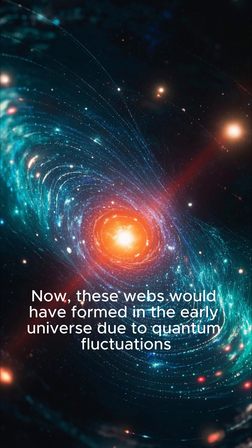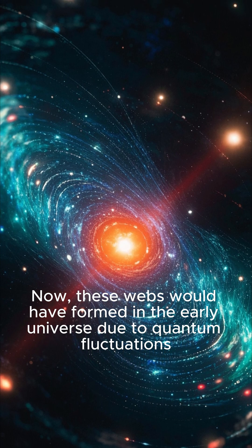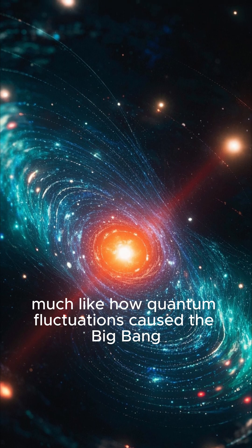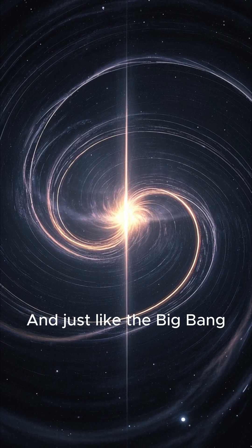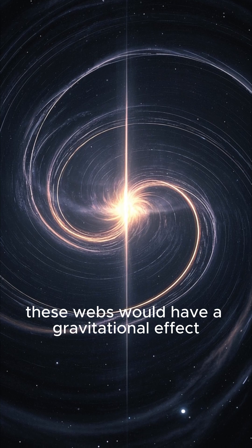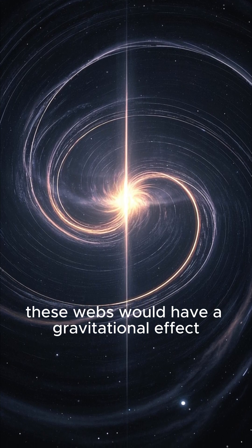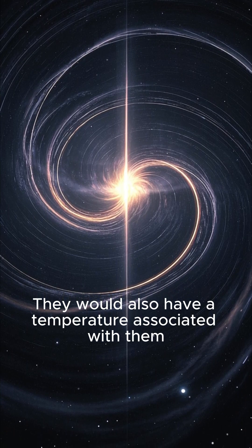These webs would have formed in the early universe due to quantum fluctuations, much like how quantum fluctuations caused the Big Bang. And just like the Big Bang, these webs would have a gravitational effect. They would also have a temperature associated with them.